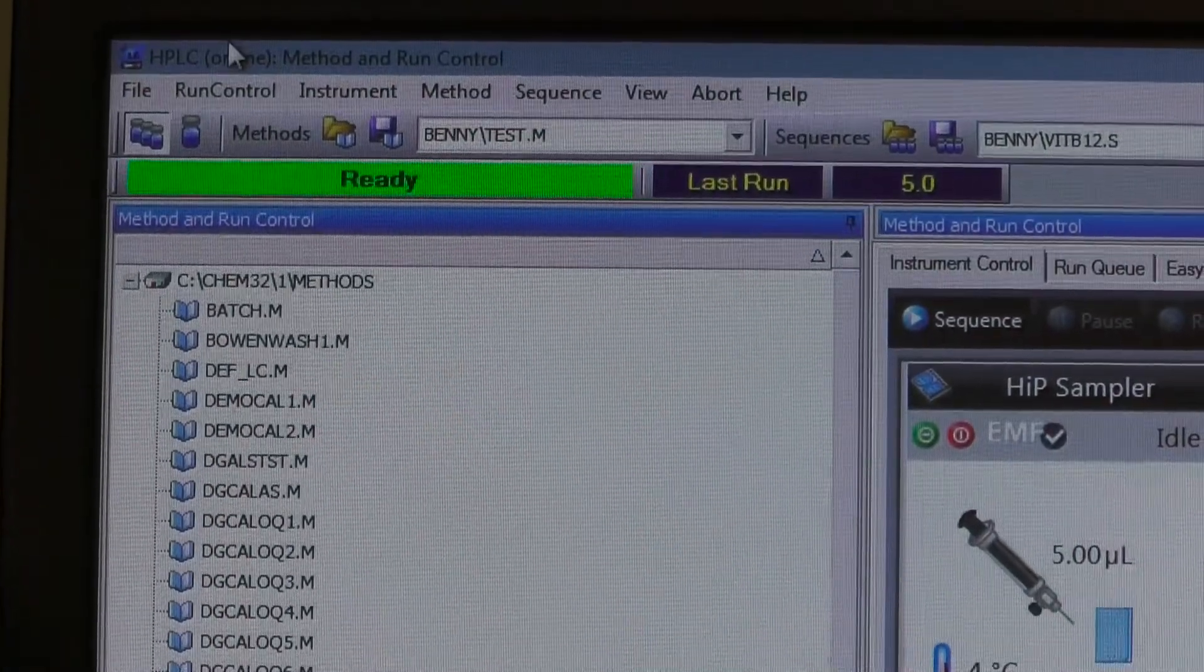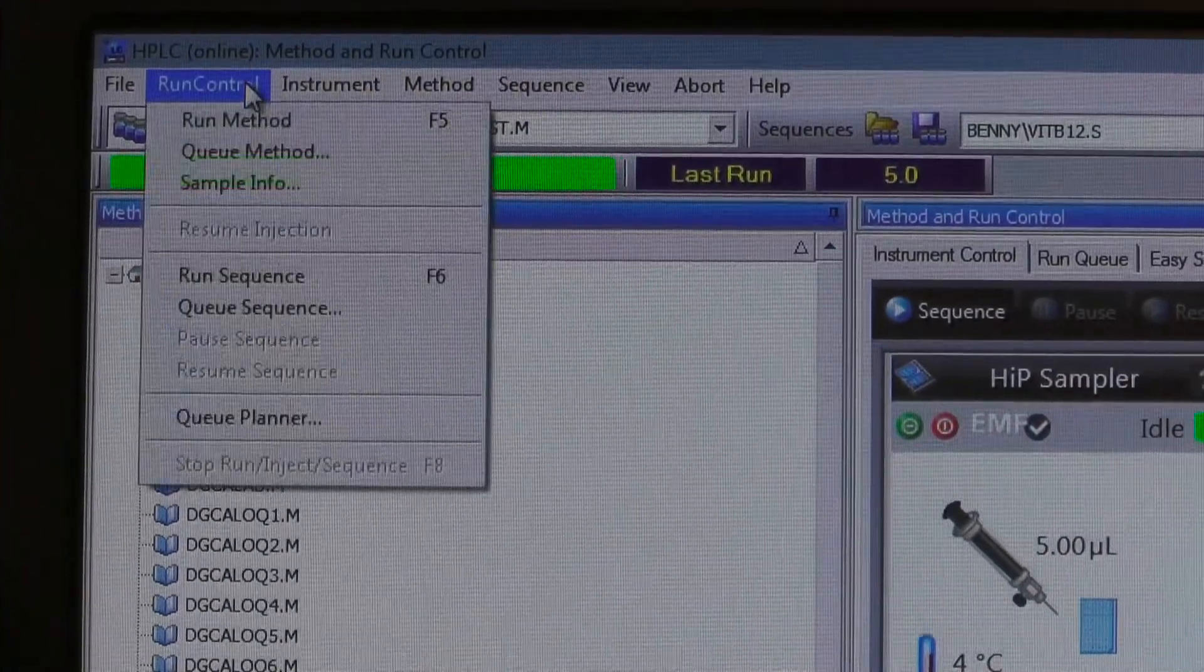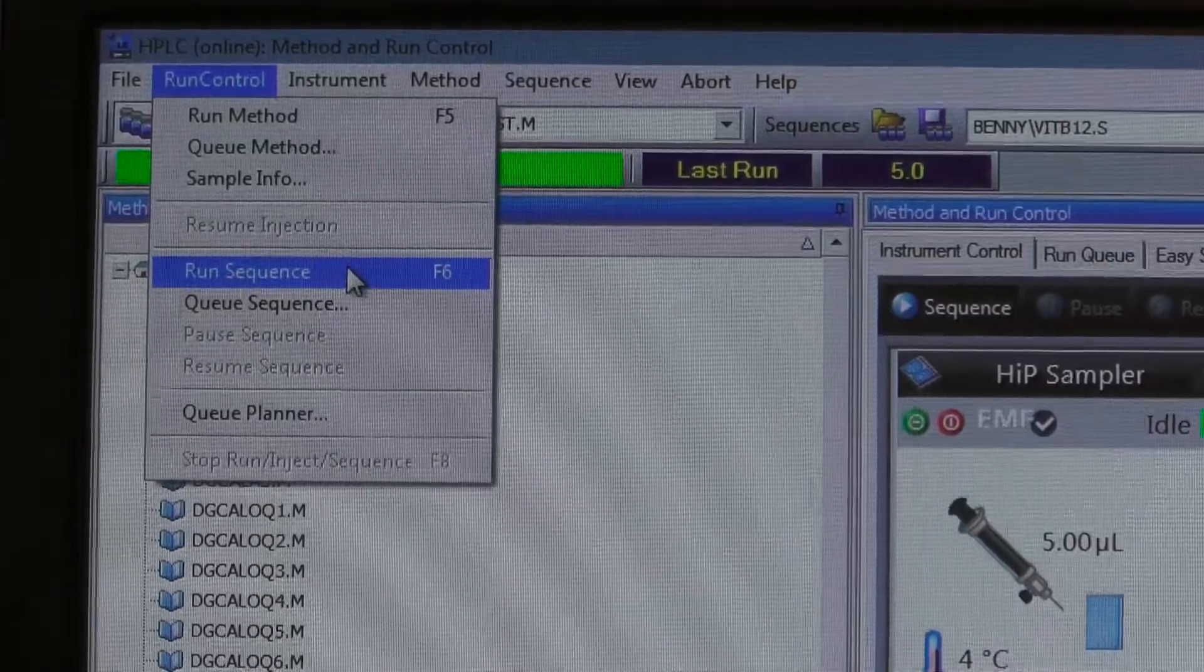Click on Run Control Tab and then Run Sequence. The Auto Sampler will start injecting your samples.